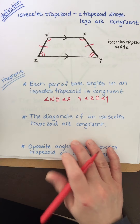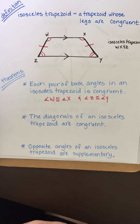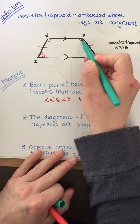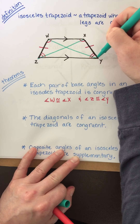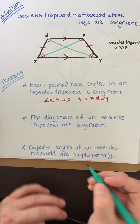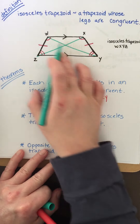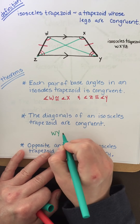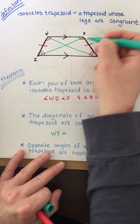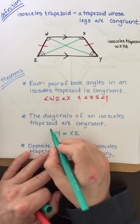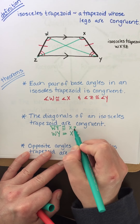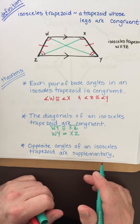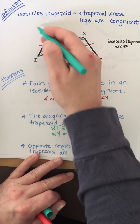The next theorem says that the diagonals of an isosceles trapezoid are congruent. Let's draw some diagonals here — these go to opposite angles. That means the length of this segment equals the length of this segment, because they're congruent. WY is congruent to XZ, so their measures are equal.